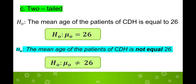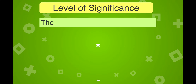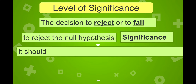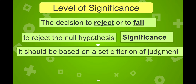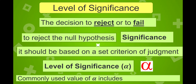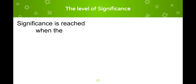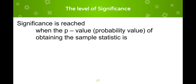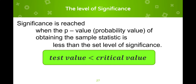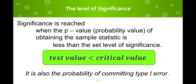The level of significance is the criterion for deciding whether to reject or fail to reject the null hypothesis, denoted by alpha (α). Commonly used values of alpha are 1%, 5%, and 10%. The null hypothesis is rejected when the probability value of obtaining the sample statistic is less than the set level of significance — that is, when the test value is less than the critical value. The level of significance is also the probability of committing a Type 1 error.